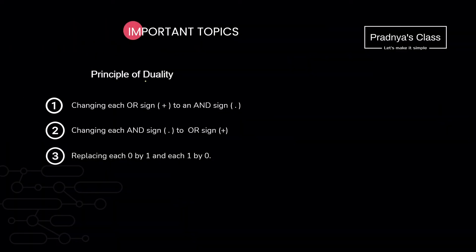Moving ahead to the next important topic on which you may get a question: the principle of duality. To find the dual, we will change the OR sign with the AND sign, and if you have an AND sign, that will be changed with the OR symbol. And if you have 0s and 1s, 0 will get replaced by 1 and 1 by 0.